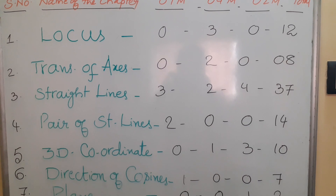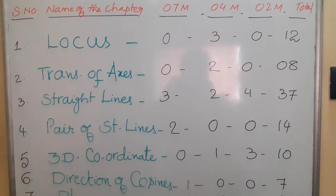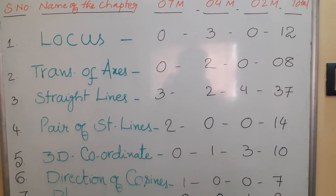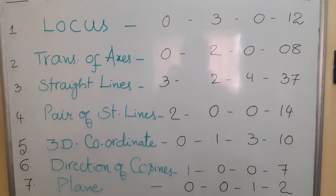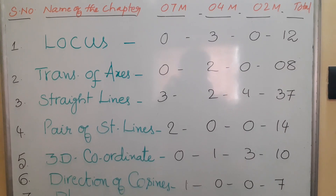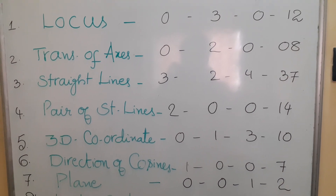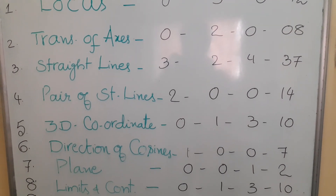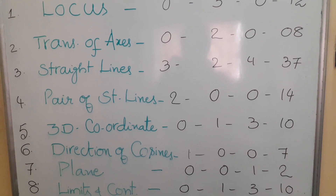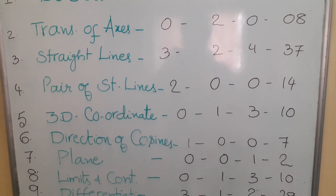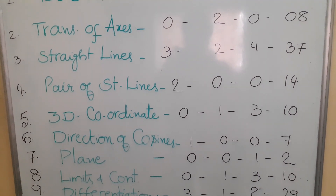Next one is Direction of Cosines. From this, only 1 seven-mark question will be given — no 4 marks, no 2 marks. So 7 ones are 7 marks. Next, Plane — from this, no 7 marks, no 4 marks, only 1 two-mark question will be given. Total weightage is 2 marks. Next, Limits and Continuity — from this, no 7-mark question; 4-mark question: 1; 2-mark questions: 3. So 10 marks weightage is given to this chapter.